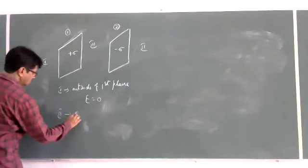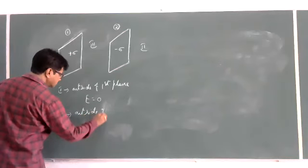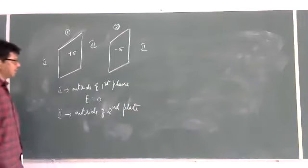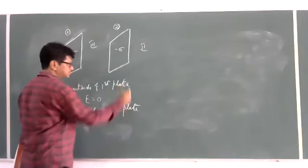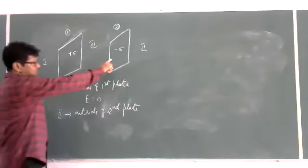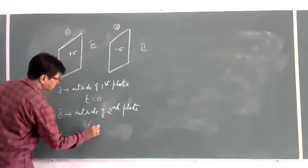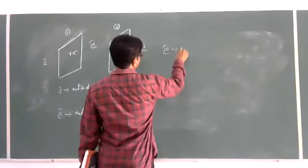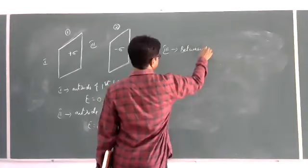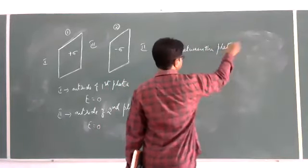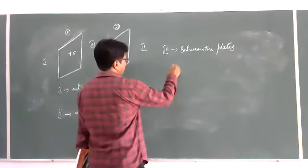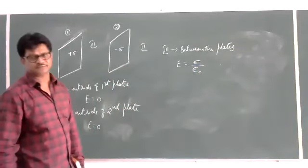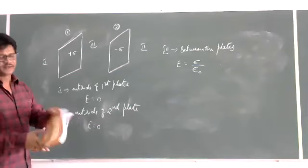Case two: outside of the second plate — there also the electric intensity is zero. Case three: between the two plates, the formula for electric intensity is E = sigma / epsilon naught. The sigma value given is 17 × 10⁻²². Epsilon naught is 8.854 × 10⁻¹².